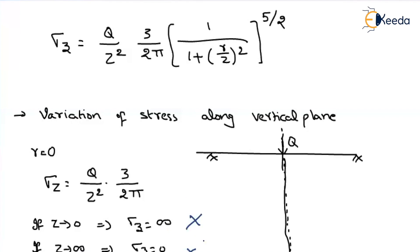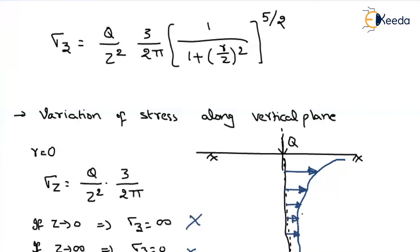So how does the stress vary? At z equal to 0 we don't define it, because it shows infinity — that is undefined. Similarly, z equal to infinity is also undefined. As you keep moving below the soil surface, as z increases, your stress decreases in a parabolic manner — that is, proportional to z squared. The stress variation is drawn as asymptotic in nature: somewhere it would be infinity and somewhere equal to 0. Moving below the ground surface, the stress magnitude decreases. This is how normal stress varies under the line of action of the load.